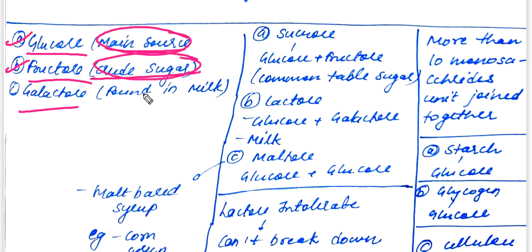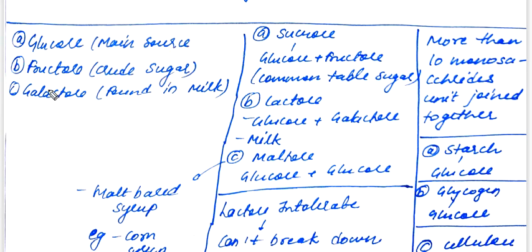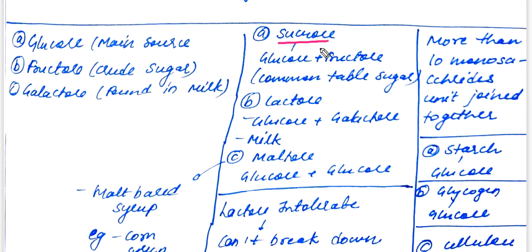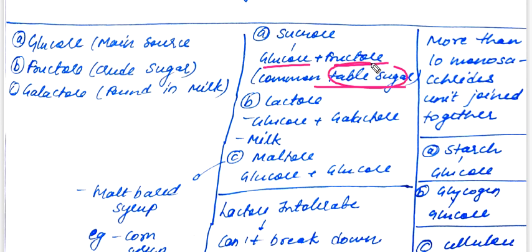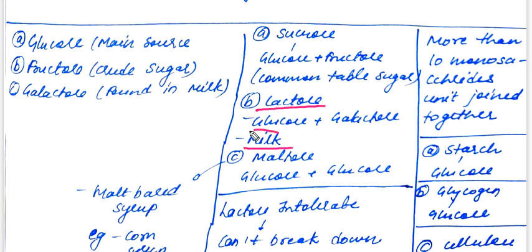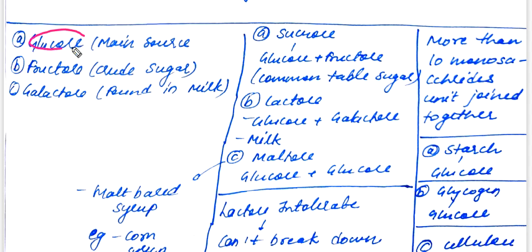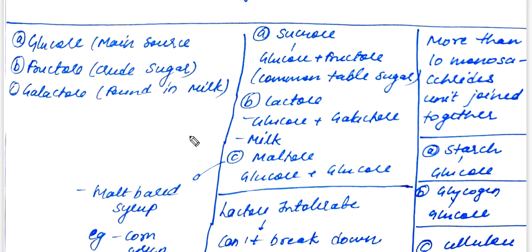Fructose is the crude or fruit sugar. Galactose is another monosaccharide. Sucrose is an oligosaccharide made of glucose and fructose — this is the common sugar or table sugar. Lactose is made of glucose and galactose. Maltose is made of glucose and glucose.